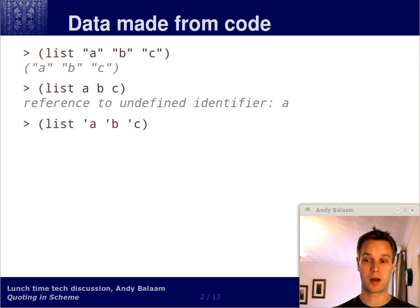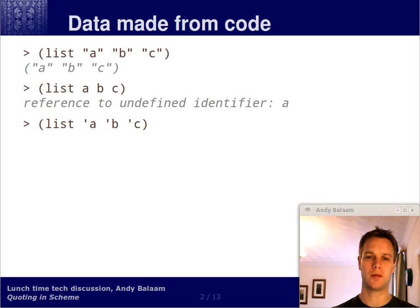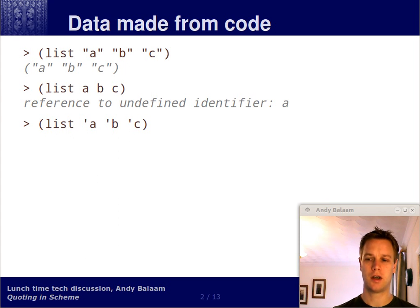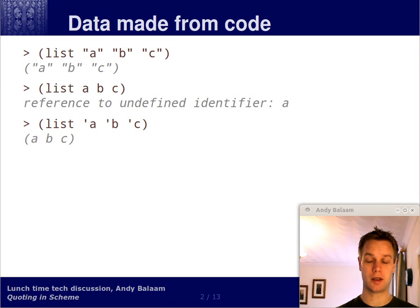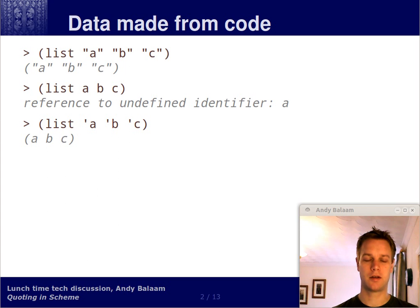The answer is by quoting. The way you quote things in Scheme is you put a single quote symbol before them. Notice that there's no end to the quotation - it's just the next thing after the single quote that gets quoted. So this is how we quote those three symbols A, B and C to make a list of the three symbols A, B and C. When you type that into your interactive Scheme interpreter what it sends back to you is A, B, C - a list of the three symbols, not strings.